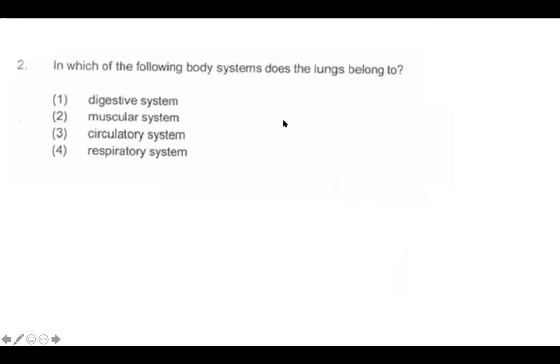In which of the following body systems does the lung belong to? Let's think about the function of each of these systems. The digestive system helps with eating, the muscular system helps with movement, circulatory system is involved in blood vessels, and the respiratory system is involved in breathing, and the lungs help us breathe. So it's number four.